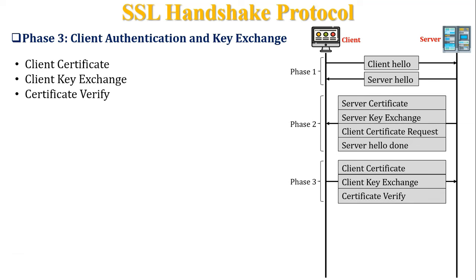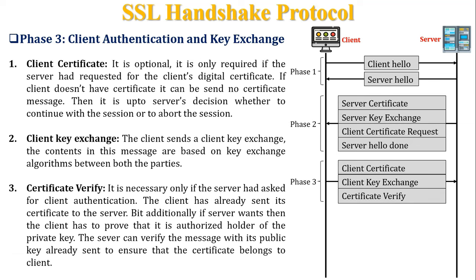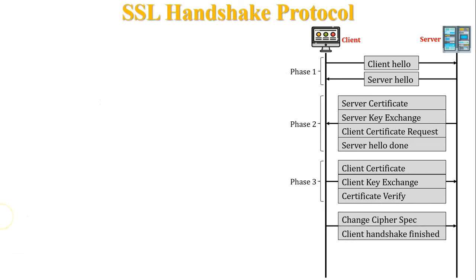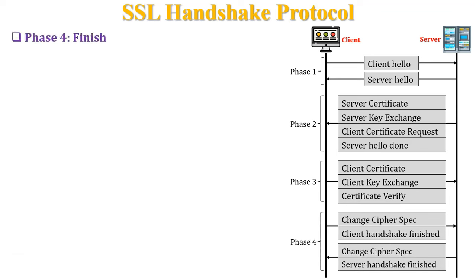The certificate verified field is necessary only if the server had asked for client authentication. The client has already sent its certificate to the server. If the server wants, the client has to prove it is the authorized holder of the private key; the server can verify this with its public key. After completion of Phase 3, client and server exchange the handshake finished message — this is called Phase 4, representing finish of handshaking.